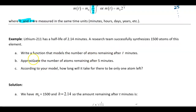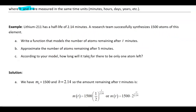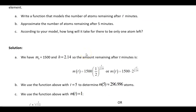The example: lithium-211 has a half-life of 2.14 minutes, starting with 1500 atoms. Part A: write a function modeling the number of atoms remaining after t minutes. Plugging into the formula: initial amount is 1500, base is one-half for half-life, h is 2.14 minutes, and t is your variable.